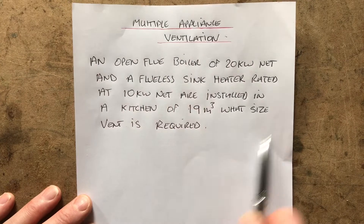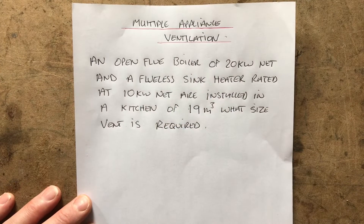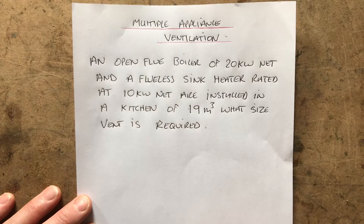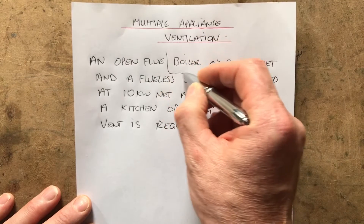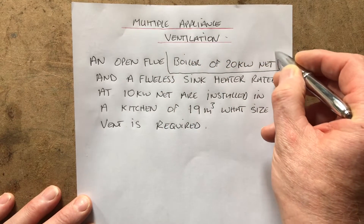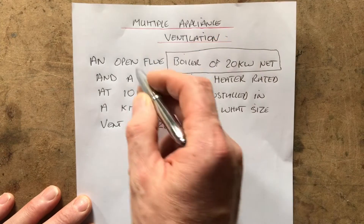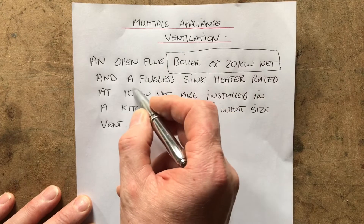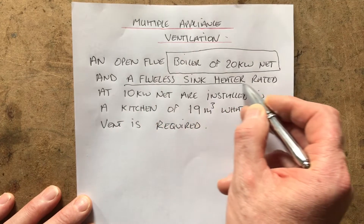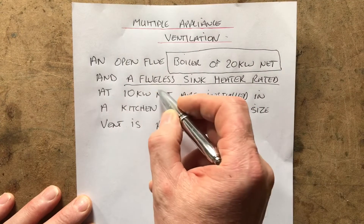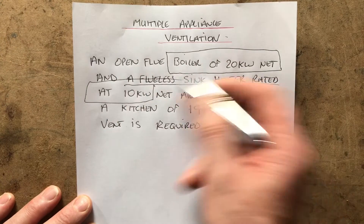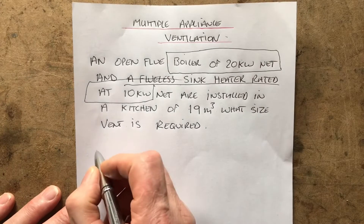Now normally when I put scenarios like this to trainees, they kind of flip out at first and think, oh no, what do I need to do? You need to break them down into their individual appliances. Our appliances are a boiler — an open-flued boiler of 20 kilowatts net — and a flueless sink heater rated at 10 kilowatts. So we'll do the boiler first.